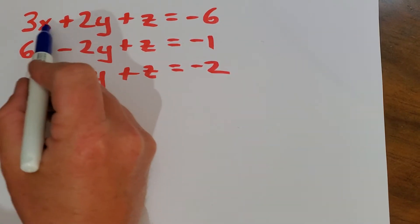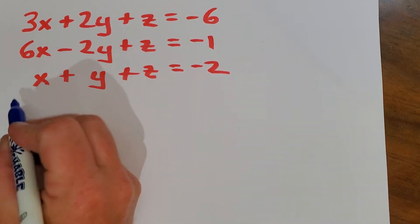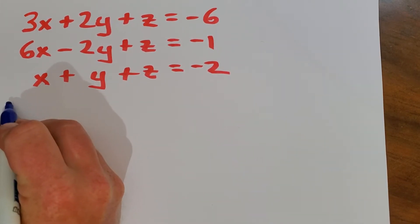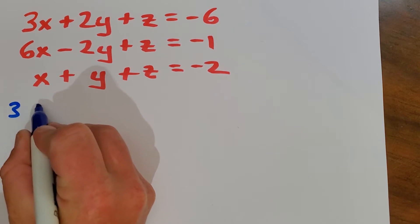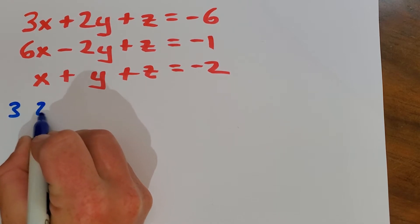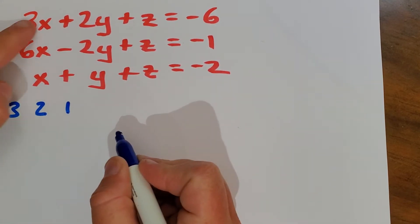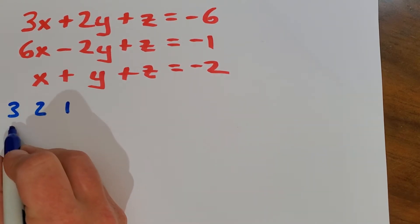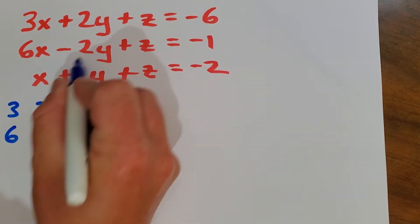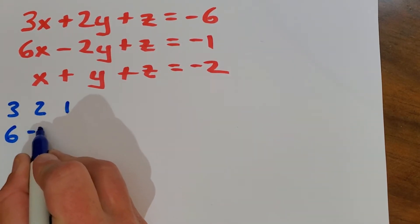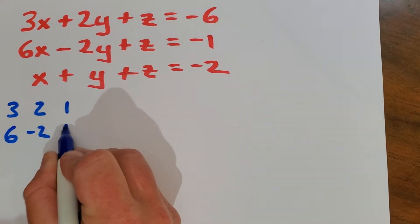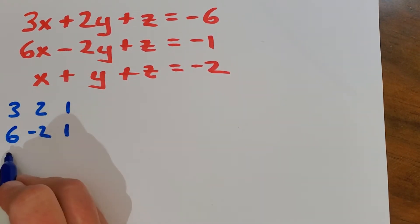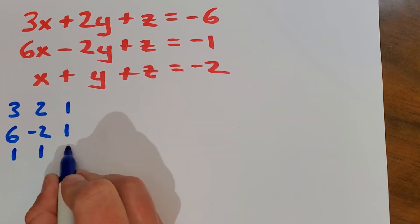What you do is you just peel off the coefficients of the variables. So first we have a coefficient of three, then we have a coefficient of two, and then a coefficient of one. And we'll pull off a six from the next one, a negative two for the next row, and a one from this row. And then we'll pull off a one, one, and a one.